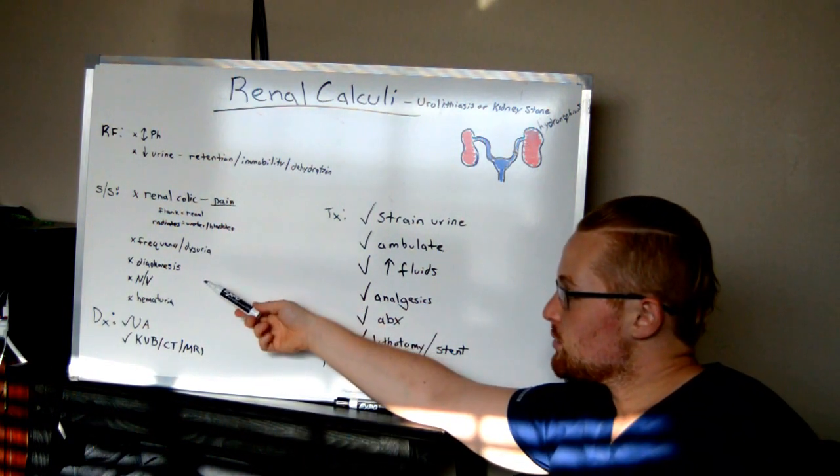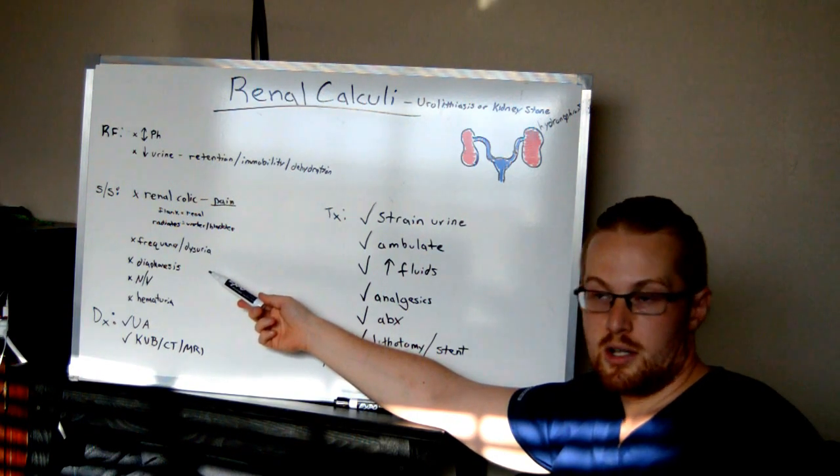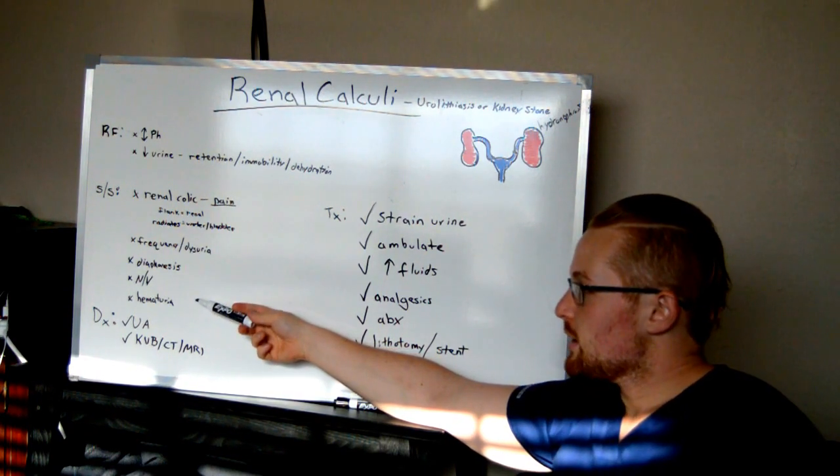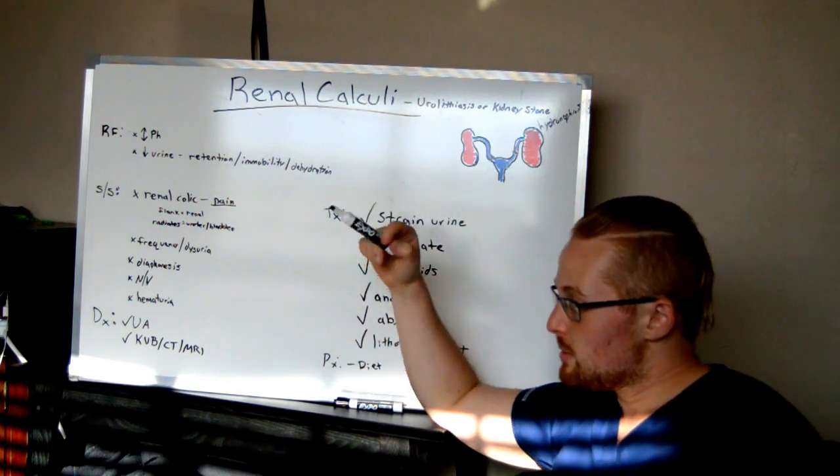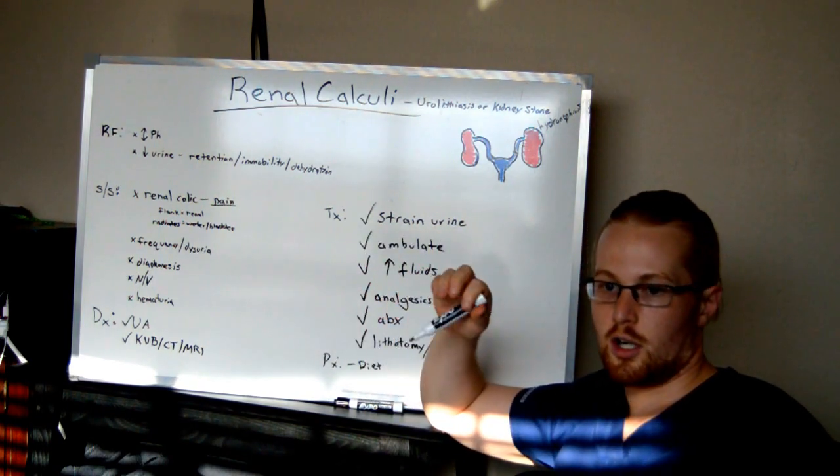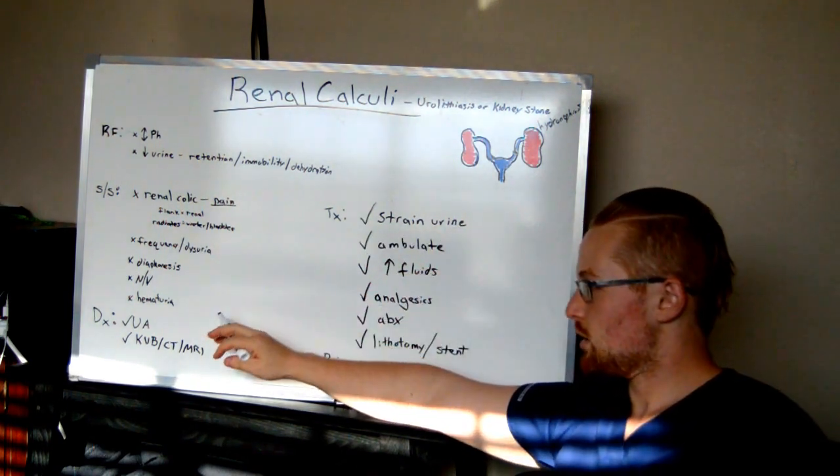And with that pain, you might have nausea and vomiting and diaphoresis, which is sweating. And you may find hematuria, which is blood in urine. And it may be visible. You may see smoky urine or bits of red-tinged urine, okay?